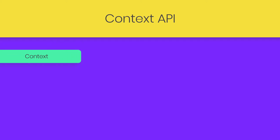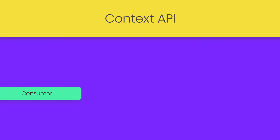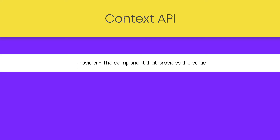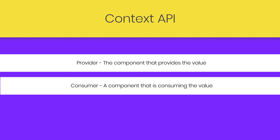There are three parts of Context API: Context, Provider, and Consumer. To create a context, we first import the React module and then use the createContext function from the React module, which takes a default value as its first argument. The createContext function creates the context — or you can say it creates a store to store your data. The component that provides the value is known as the Provider.